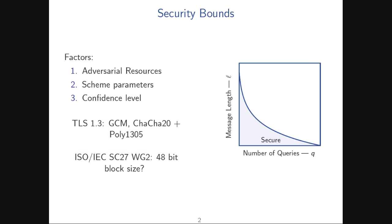Security bounds are actually used in practice by standards organizations. For TLS 1.3, they needed to decide whether to include a key update function for GCM, based on bounds from the literature. In the ISO standardization process, they're now deciding whether a 48-bit block size is big enough as a block cipher, because Simon and Speck are going through standardization and security bounds come into play there as well.